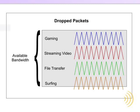Wired QoS — meaning devices that are physically plugged into the router — provides us with a little bit more flexibility. It allows us to prioritize according to a device's MAC address, the physical port they're plugged into on the router, and certain types of applications.